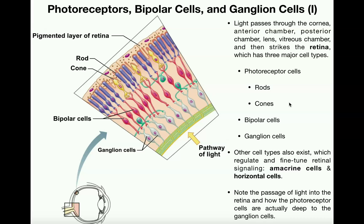We're going to have a separate video covering the major differences between rods and cones, but for now: rods detect non-colored light — just bright and dark — and cones detect color. C for cones, C for color. We also have bipolar cells, and then ganglion cells, which eventually become continuous with the optic nerve.